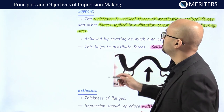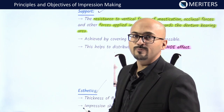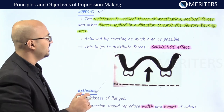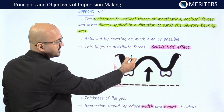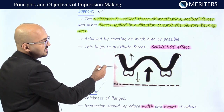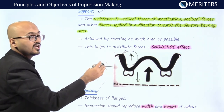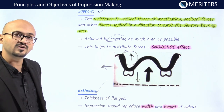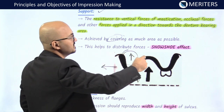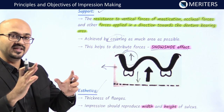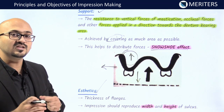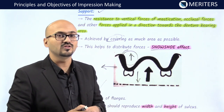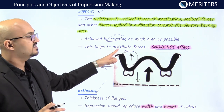The last two objectives are support and aesthetics. Support is the resistance to vertical forces of mastication, occlusal forces, and other forces applied towards the denture-bearing area. Support is towards the denture-bearing area, while retention is away from it, and stability is horizontal. Support is achieved by covering as much area as possible, which helps distribute forces by the snowshoe effect — the larger the denture area, the wider the force distribution and the lesser the bone resorption. Wider coverage area is associated with the snowshoe effect.